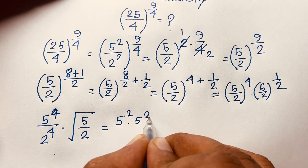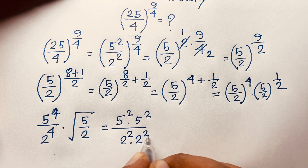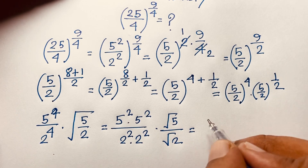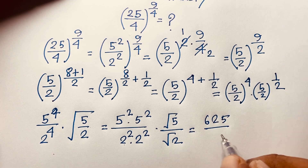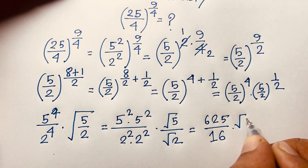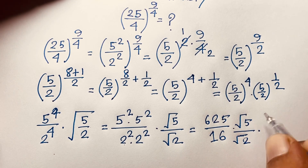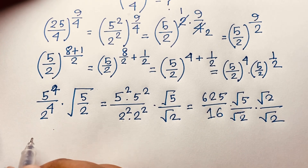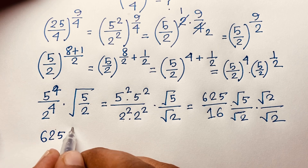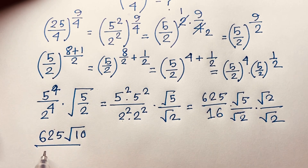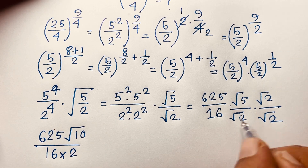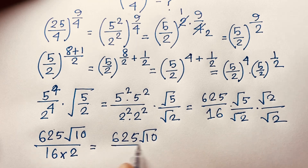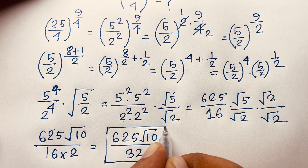Now 5^4 = 5² × 5² = 25 × 25 = 625, and 2^4 = 2² × 2² = 4 × 4 = 16. We have 625/16 times √5/√2. To rationalize, multiply by √2/√2: the denominator becomes 16 × 2 = 32, and the numerator becomes 625 × √(5×2) = 625√10. So the answer is 625√10 over 32.